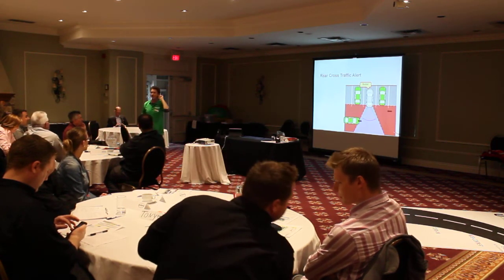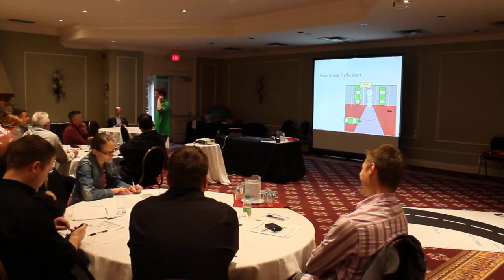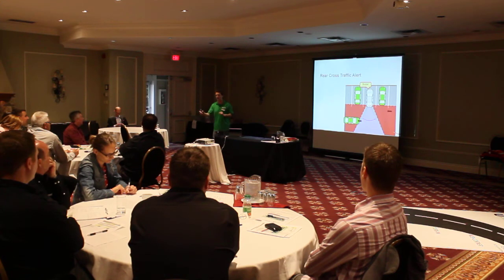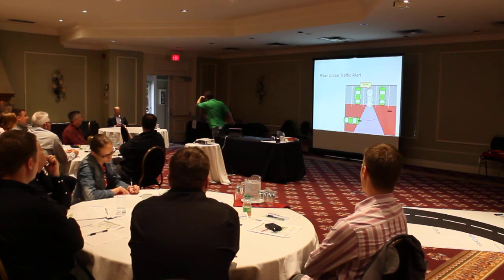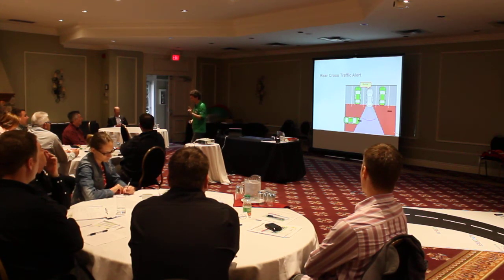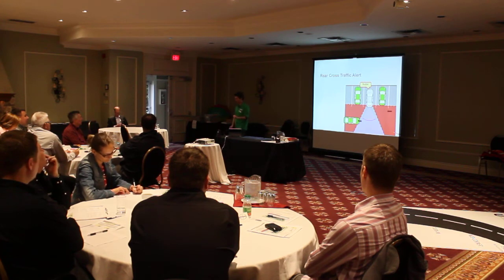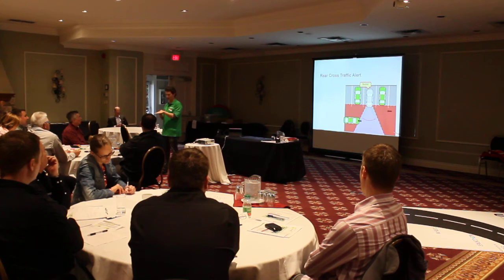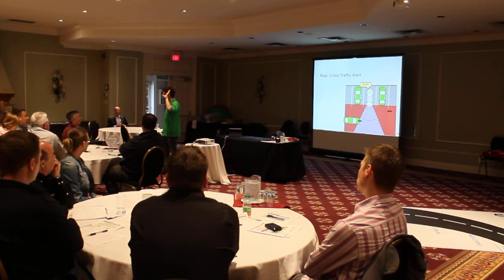Rear cross traffic alert uses the same icons but makes a sound. How it works is when I put the vehicle in reverse — the vehicle must be in reverse — rear cross traffic alert wakes up and starts scanning constantly. If your vehicle is between zero to six kilometers per hour and approaching vehicles are between eight and 28 kilometers per hour, it will do a calculation: at your speed and their speed, you're going to T-bone. It will flash the mirrors and make a sound — beep beep beep.